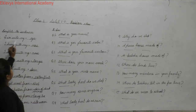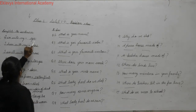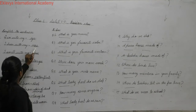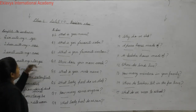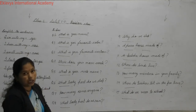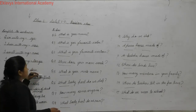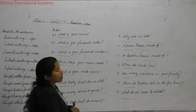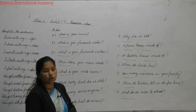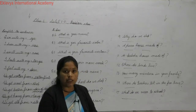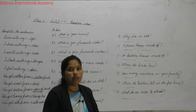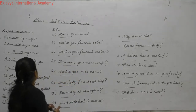I repeat again: I see with my eyes, I hear with my ears, I smell with my nose, I taste with my tongue, I feel with my skin. These are the five sense organs. How many sense organs? Five sense organs in our body — eyes, nose, ear, tongue, and skin.